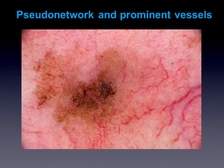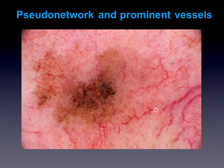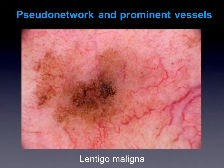Here is an example where we can summarize both criteria I wanted to show you in this podcast. We see this pseudonetwork with the round holes, and in the surrounding skin we see the prominent vessels — a finding which is very common in sun-damaged skin. In the next podcast you will hear why this is a lentigo maligna. Thank you for your attention.